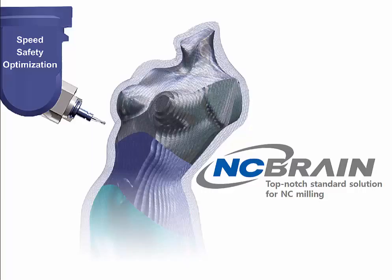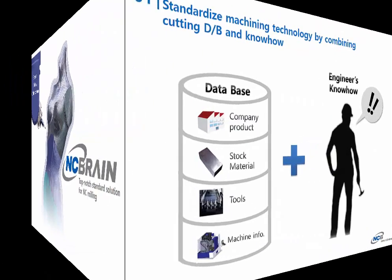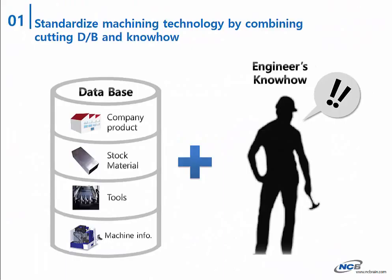NCBrain makes machining possible in a faster, safer, and more optimized way. NCBrain builds the best database considering items, stocks, tools, and machine types to raise the upper standard of machining technology.